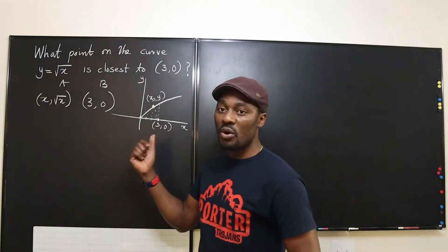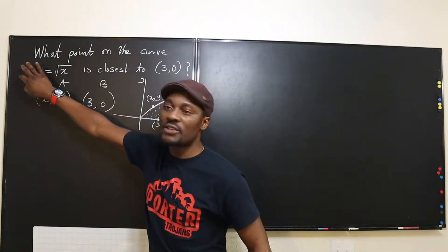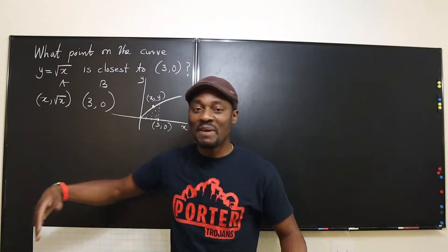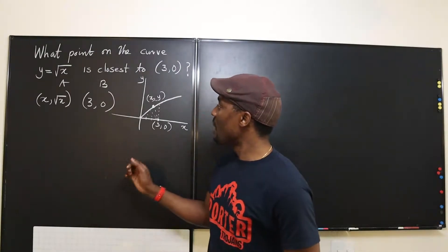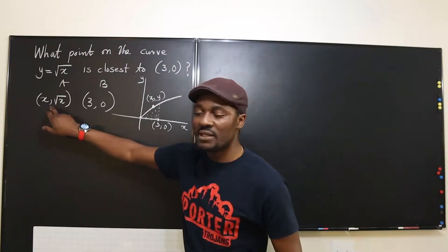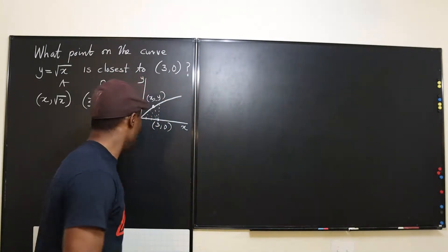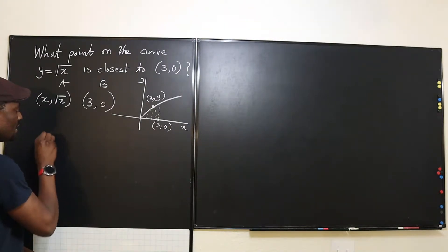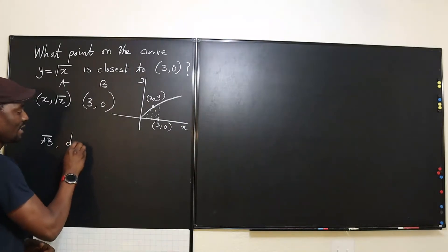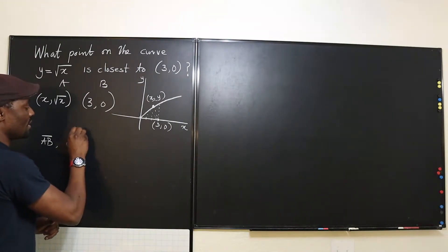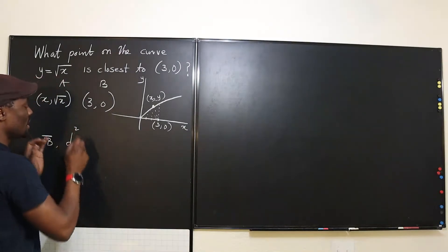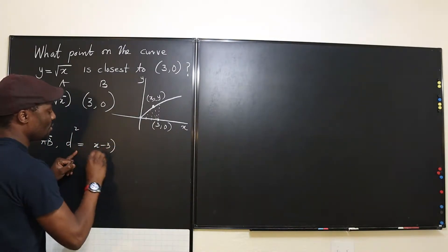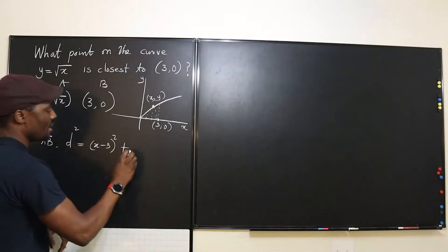Remember: given a point and a function, just isolate y — know what y is — and you'll be able to set up the problem. You may need to isolate x instead depending on which is easier. Now let's apply the distance formula. We'll represent the squared distance as d² to avoid dealing with square roots.